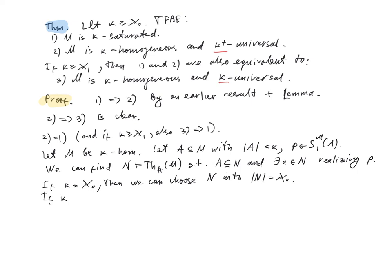If κ is greater than or equal to ℵ₁, then we can choose N with cardinality less than κ. Because the set of parameters is countable, by the downward Löwenheim-Skolem theorem we can find an elementary substructure of the elementary extension realizing p, so that it contains both A and the realization of type p. Its cardinality is at most the cardinality of A plus the cardinality of the language, which is countable, hence less than κ.